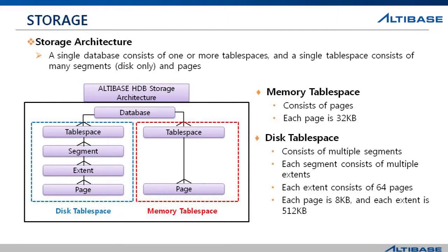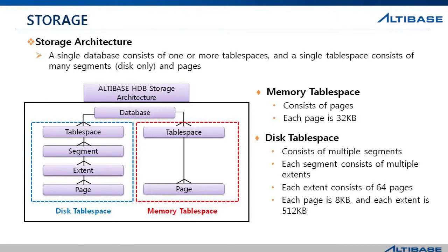The page is the smallest unit, like in other DBMSs. In a memory tablespace, the page size is 32 kilobytes. The disk tablespace is used for storing and managing large amounts of data, so it must be managed well to store and manage data efficiently. A single disk tablespace contains multiple segments, and a single segment consists of multiple extents. A single extent consists of 64 pages. For pages in a disk tablespace, the size is 8 kilobytes each, so the size of a single extent is 512 kilobytes — 8 kilobytes times 64 equals 512.